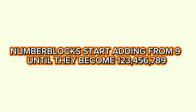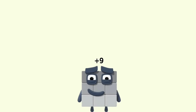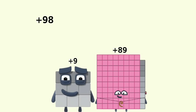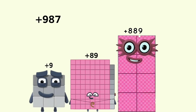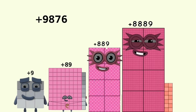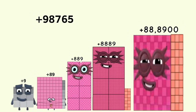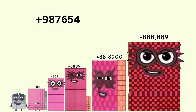Number Blocks start adding from 9 until they become 123,456,789. The sequence builds: 9, 98, 98,765.